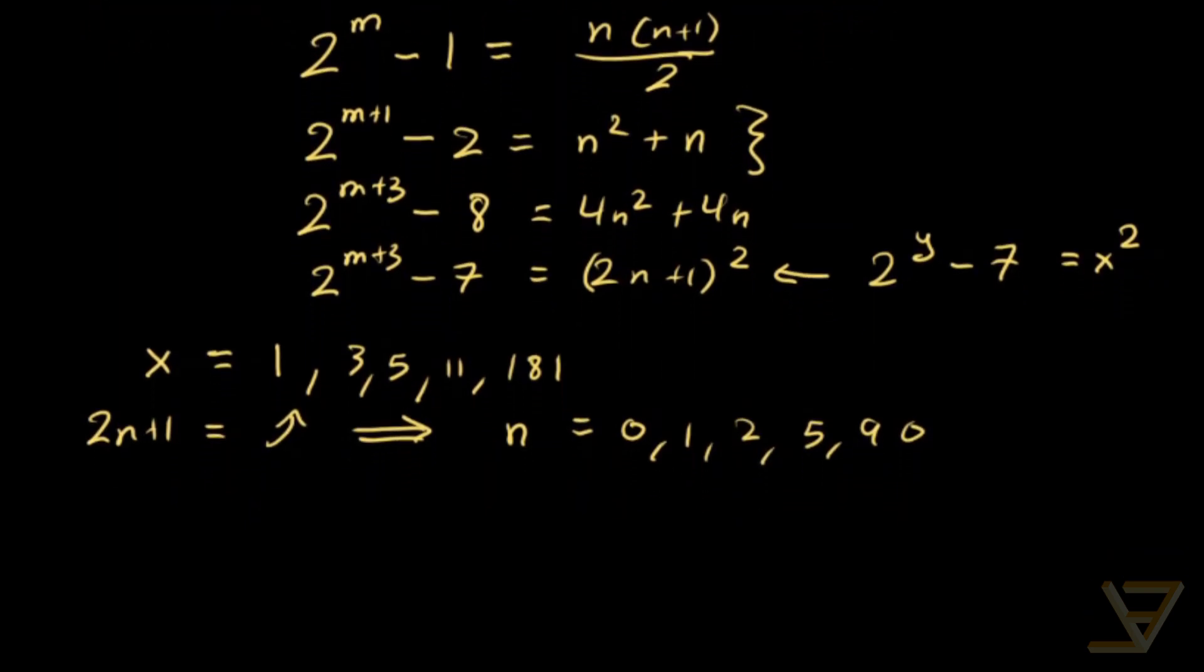And finally, the Mersenne numbers are 2 to the m minus 1, which equals n times n plus 1 divided by 2.